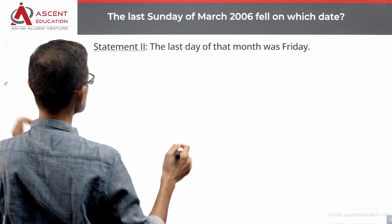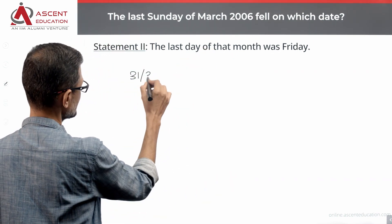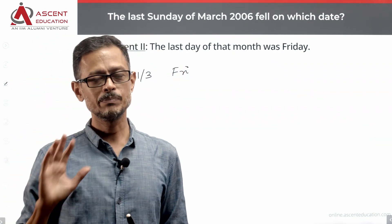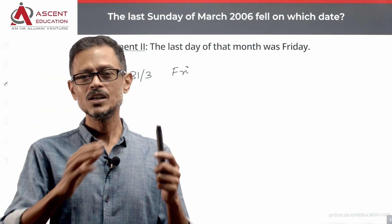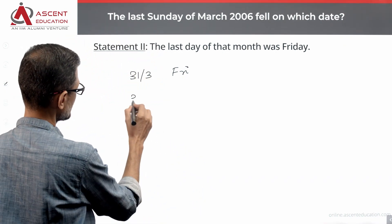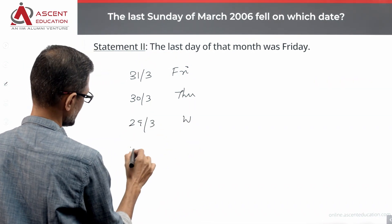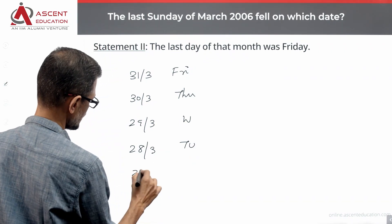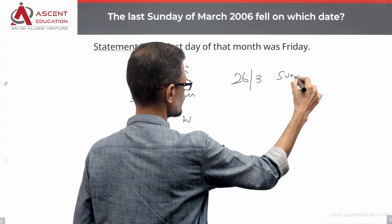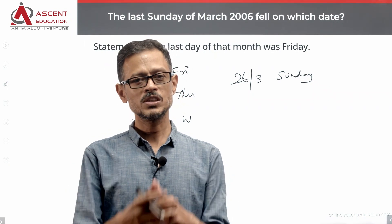Statement two alone: the last day of the month was Friday. March's last day is the 31st. So the 31st of March is a Friday. Working backwards: the 30th is Thursday, the 29th is Wednesday, the 28th is Tuesday, the 27th is Monday, and the 26th is a Sunday. We have worked backwards from the 31st and found that the last Sunday of the month is the 26th of March. So Statement two is also sufficient.